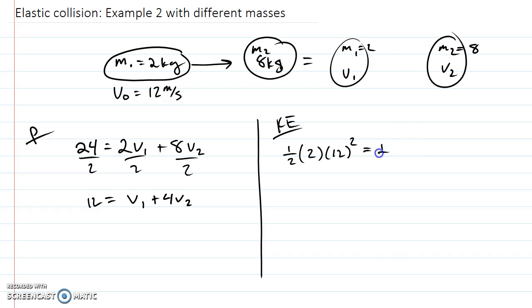On the other side, we're going to have 1/2 m1, which actually we know m1 is 2 still, times v1 squared plus 1/2 times 8 times v2 squared. So again, another equation with v1 and v2, which we don't know yet. Let's multiply this out. So 1/2 times 2 is just 1. This would be 144 equals 1 times v1 squared, and 4 times v2 squared.